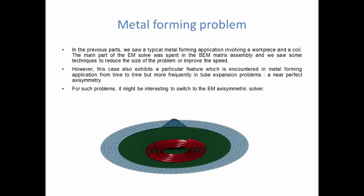In the previous parts we saw that a typical metal forming application involved a coil and a workpiece, and that the FEM-BEM method used by the EM solver made the runs robust and accurate. And we really insisted upon the fact that the BEM matrices took time assembling them, they were the driving cost of the analysis, and made the EM runs not computationally cheap. We also saw some techniques that reduce the size of those BEM matrices.